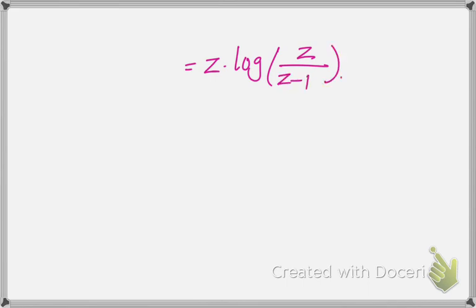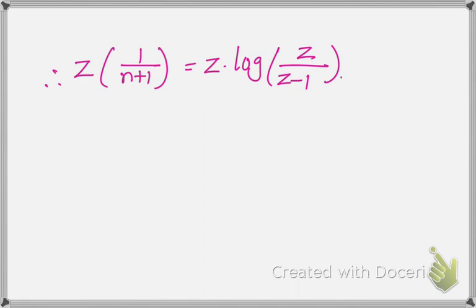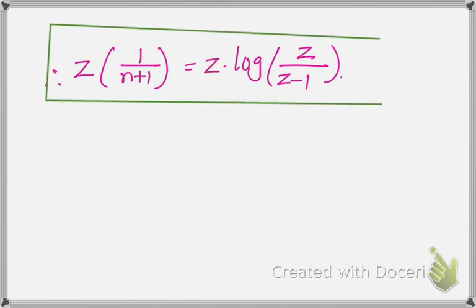What is our left-hand side value? It is Z of 1 over (n plus 1). So we have proven: Z of 1 over (n plus 1) equals C times log of C over (C minus 1). One more condition is given: mod of x less than 1, but in this problem they are not asking us to prove that, so we stop here.